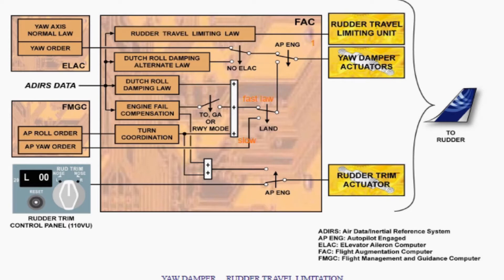First of all, if we have not engaged the auto-pilot, then digital damping, engine failure compensation, and turn coordination control — using normal law in this condition when auto-pilot is not engaged. And if we lost both elevator ELAC computers, then the yaw damper orders are lost and just Dutch roll damping alternate law is available.